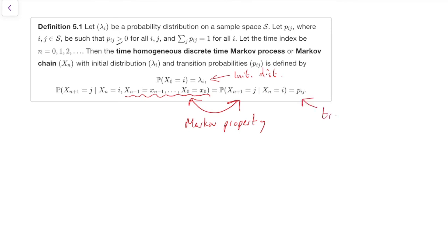And then we have this p, i, j, the transition probability, that we just discussed. So that's our definition.